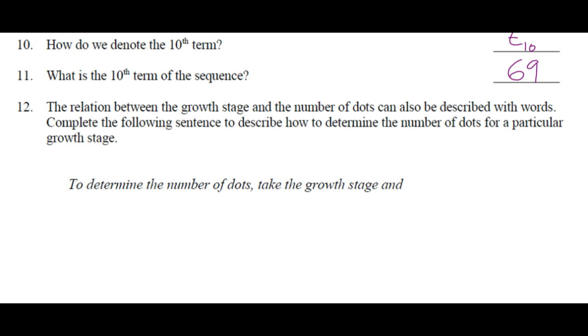The relation between the growth stage number and the number of dots can also be described with words. Complete the following sentence to describe how to determine the number of dots for a particular growth stage. To determine the number of dots, take the growth stage and do what? Well, that doesn't work for the first growth stage. You need to come up with something that's going to work for anything, right? If the growth stage is 6, then I should be able to take the 6, do something to it, and come out with a 41.